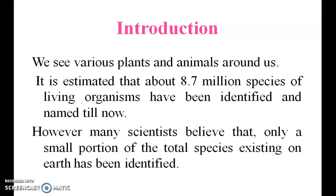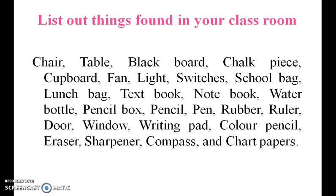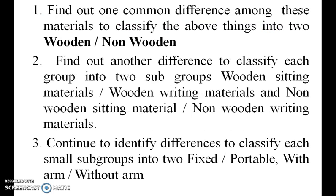So, here is a list of things found in your classroom: a chair, table, blackboard, pencil, pen, and a drop cloth. Find out one common difference among these materials to classify the above things into groups.